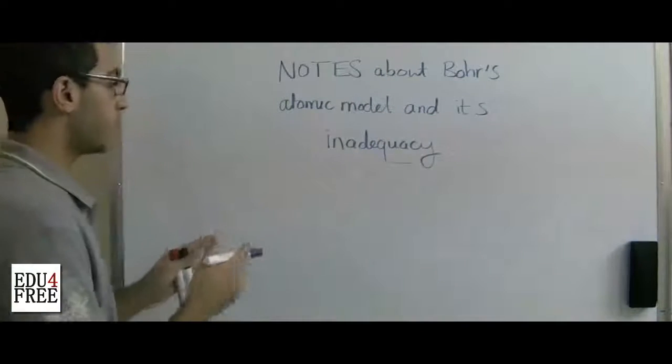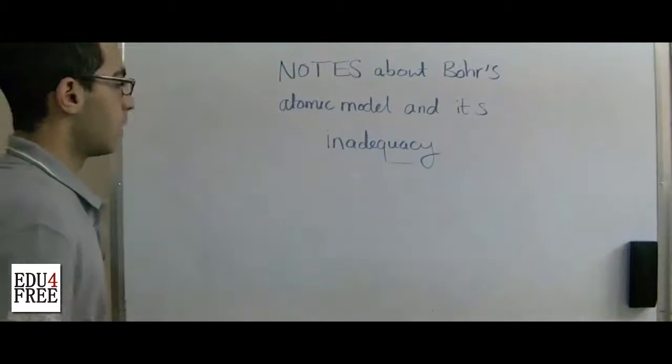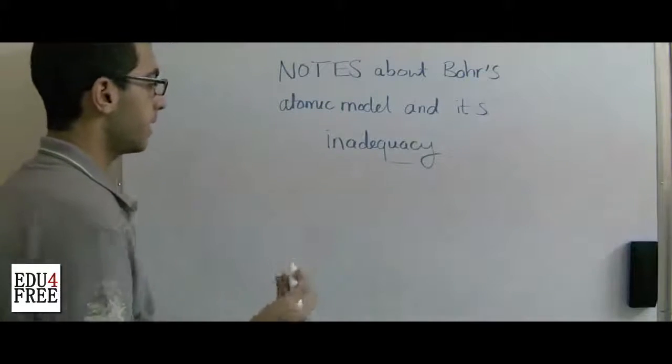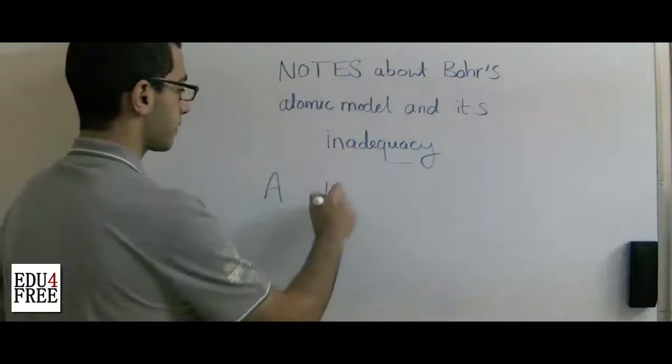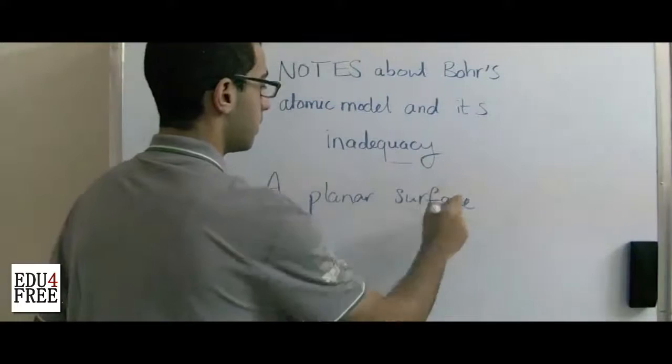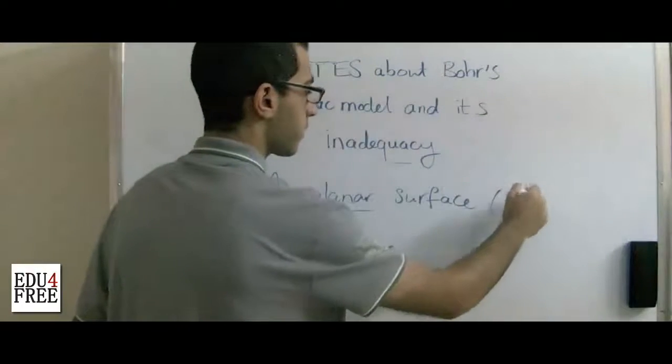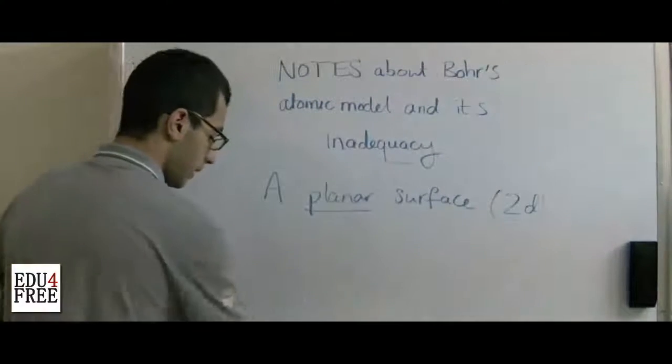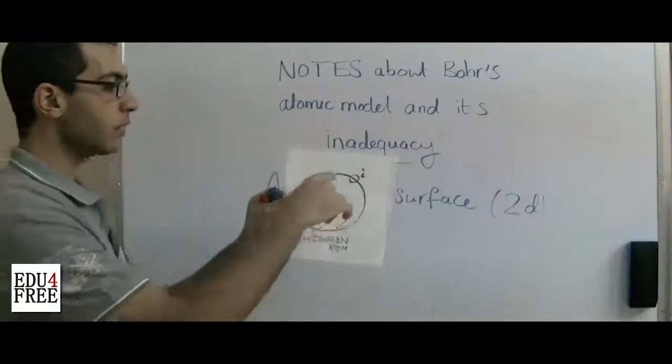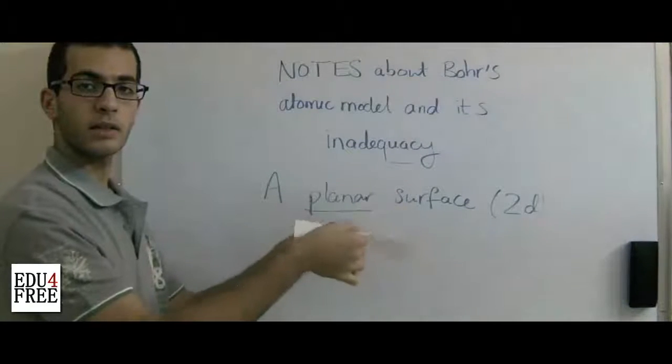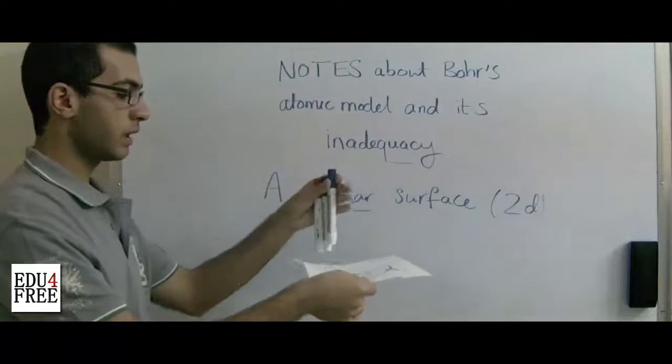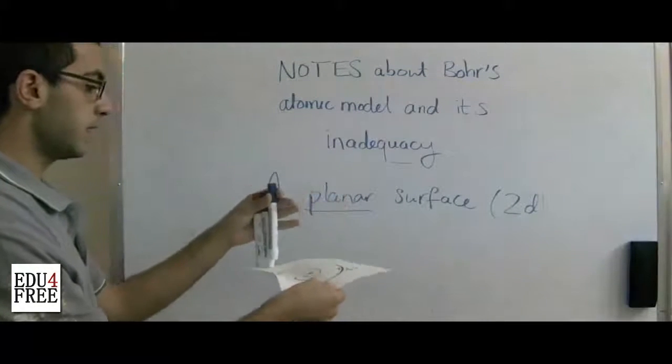And finally, he said that the electron is a particle orbiting in a planar surface. A planar surface means a 2D surface, like this paper. He said that the electron orbits in an orbit like that. Just a 2D.